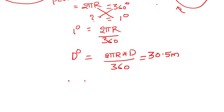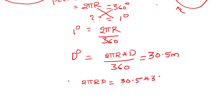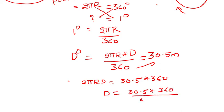From this equation, 2πR × D = 30.5 × 360. So D is equal to 30.5 × 360 divided by 2πR.